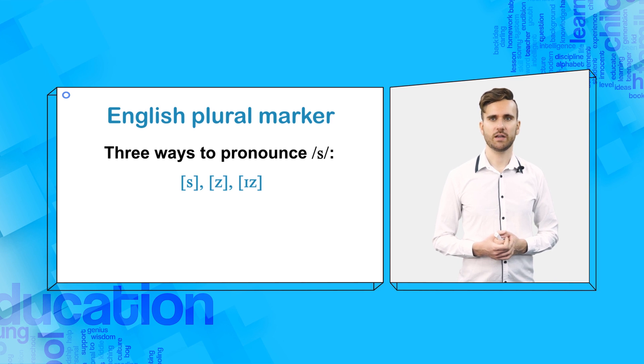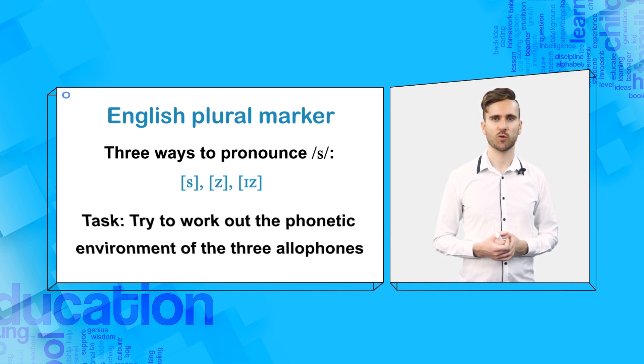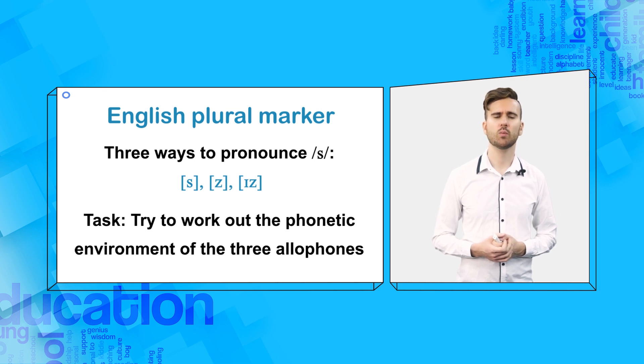The video will now pause. Try to work out the phonetic environment of the three allophones, which determines which allophone is used. And in case you are confused, to be clear, we are not discussing the different ways to use plural in English. For example, child, children, mouse, mice. Instead, this is about different ways to pronounce s.